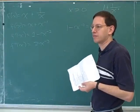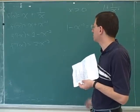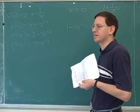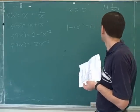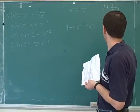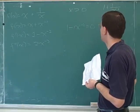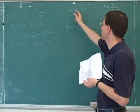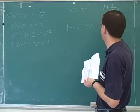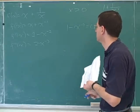Critical points are wherever the first derivative is zero or where it's undefined. The undefined case might not come up too much, but you have to check to see if it's undefined anywhere. But we're only looking at positive x's, and this is defined for all positive x's, so we just look for where the first derivative is zero.